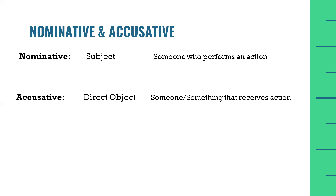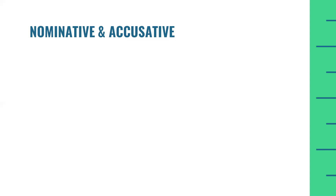Let's summarize. Nominative is the subject of the sentence — someone who performs an action will be the subject, and the subject is called nominative. Accusative is the direct object of the sentence — someone or something that receives an action will be the direct object, and the direct object in German language is called accusative.